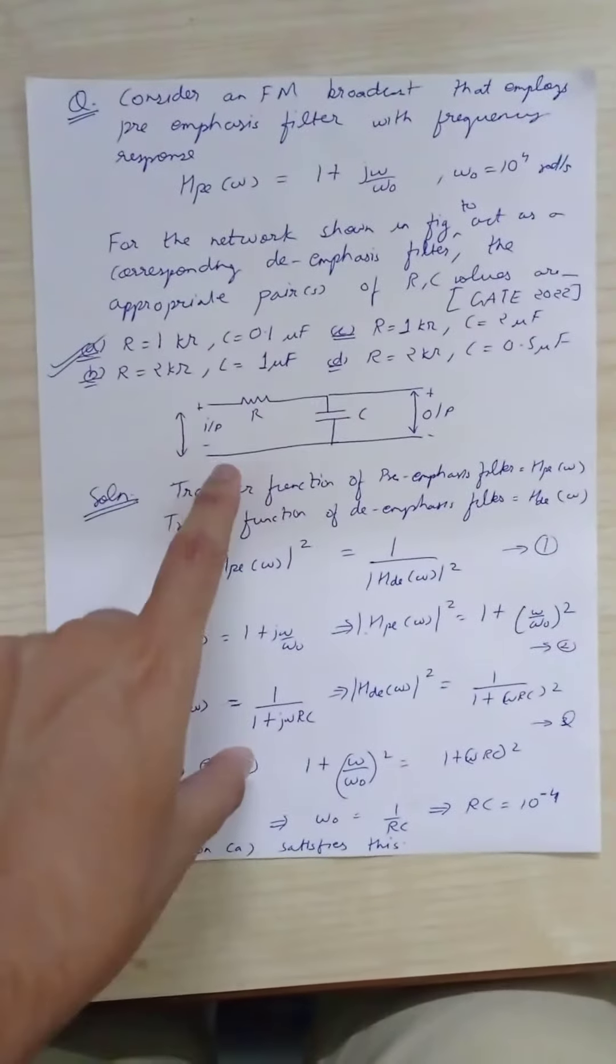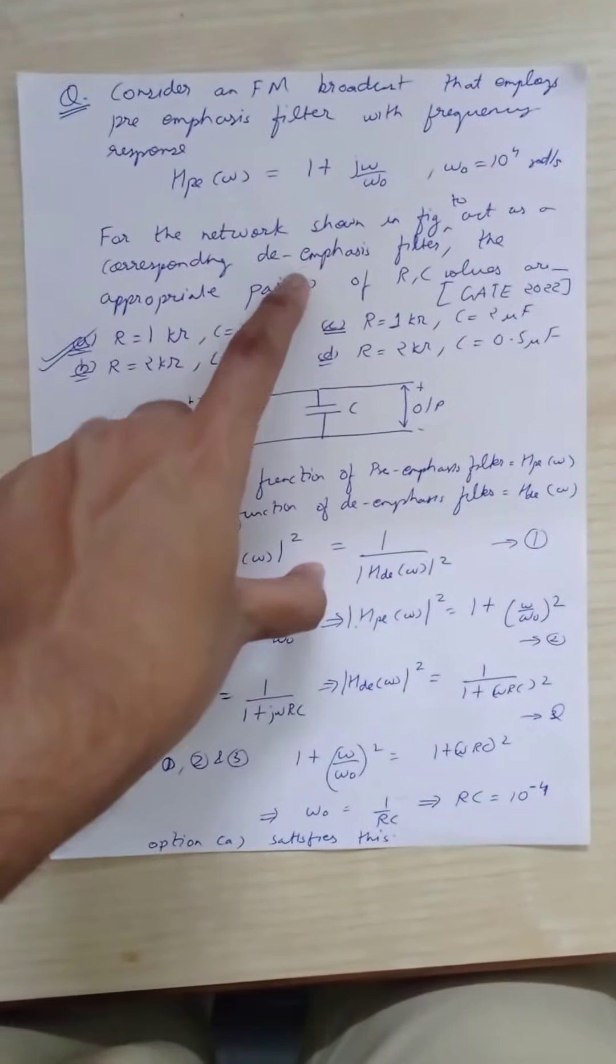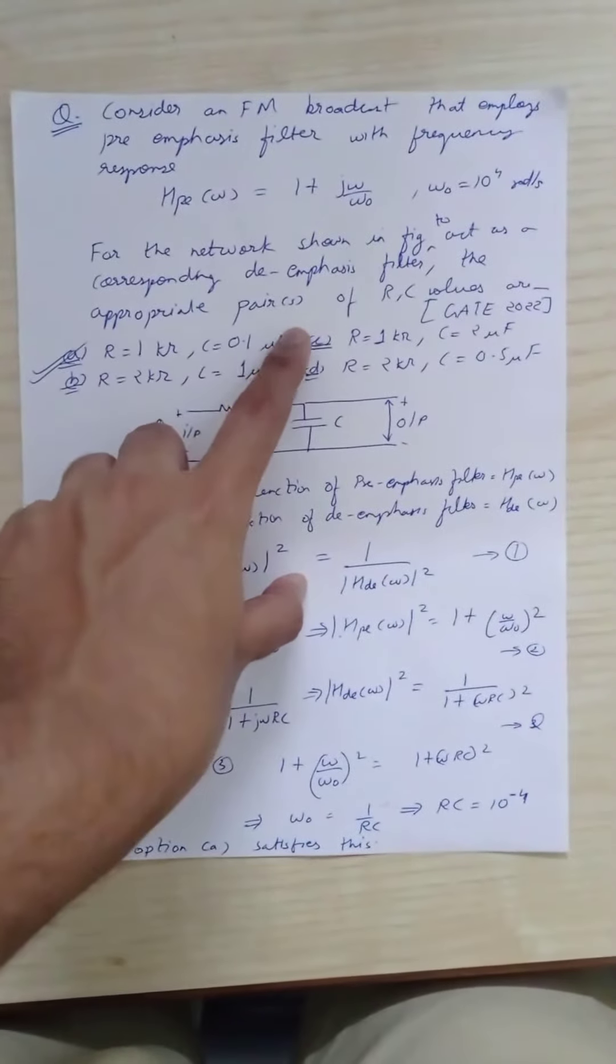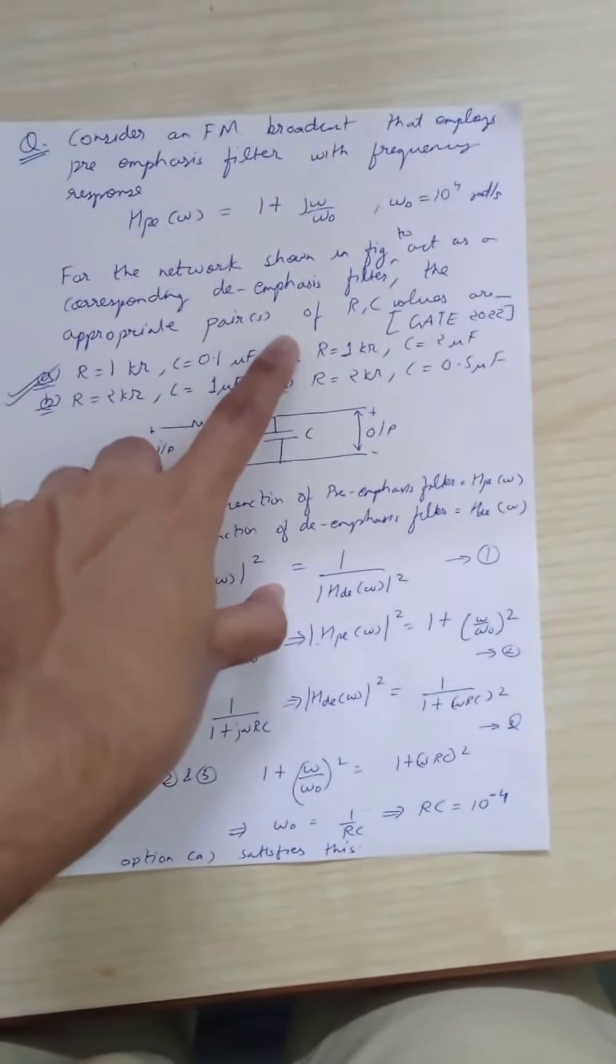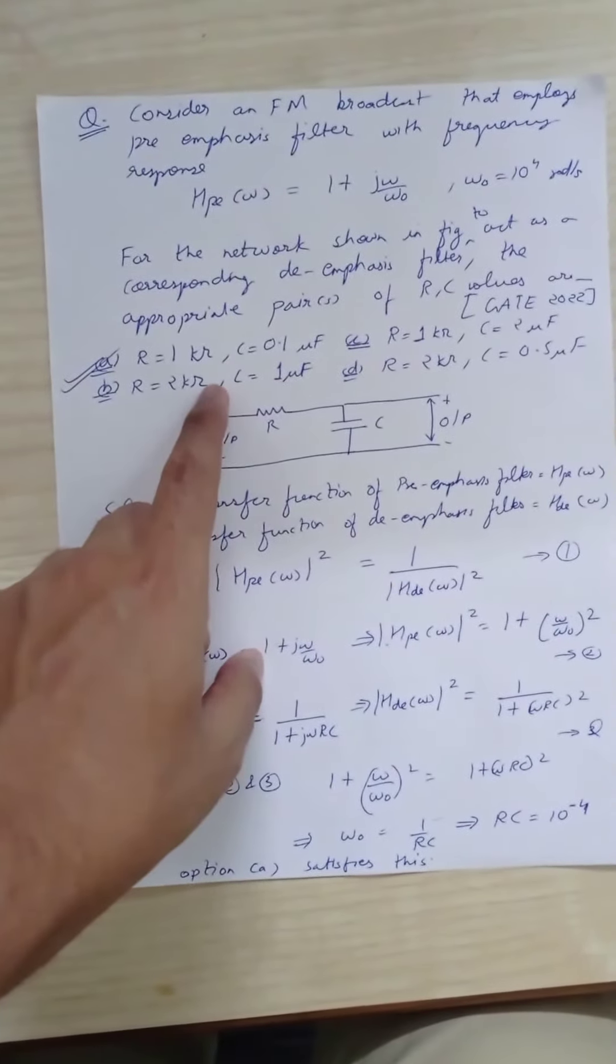For the network shown in the figure to act as the corresponding de-emphasis filter, we need to find the appropriate pair of RC values. Four options are given.